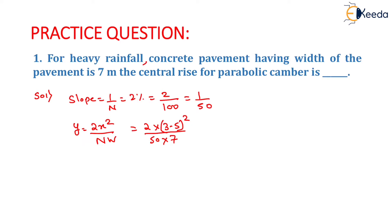Now, why we put the value of x as 3.5 here, because x is varying from this point to this point. So, at this point the value of x is 0 and at central point of the pavement the value of x is 3.5 meter because the overall width of the pavement is 7 meter.